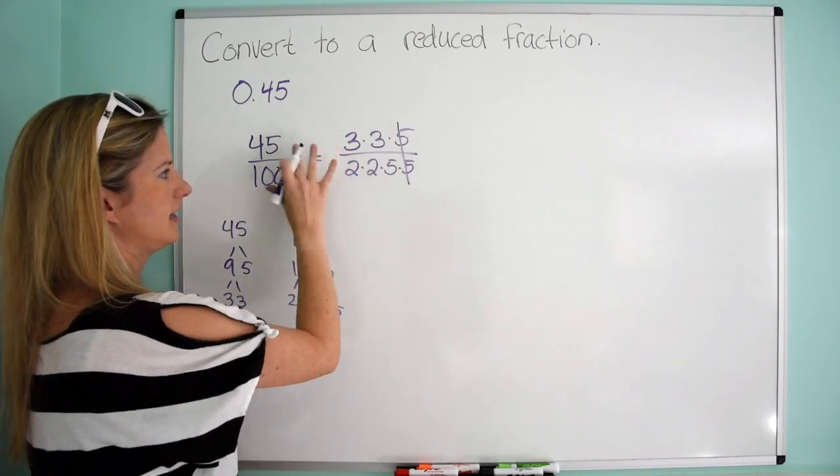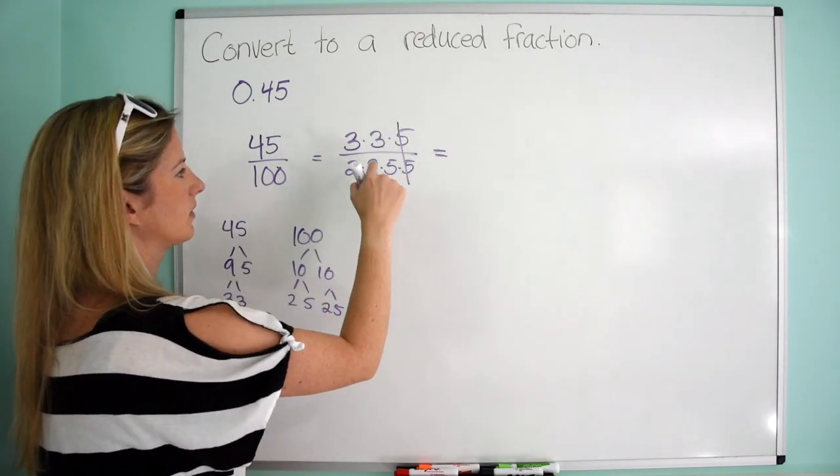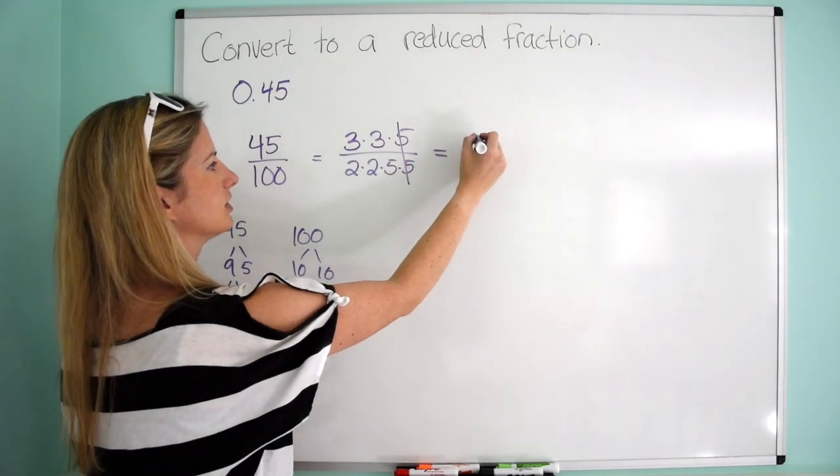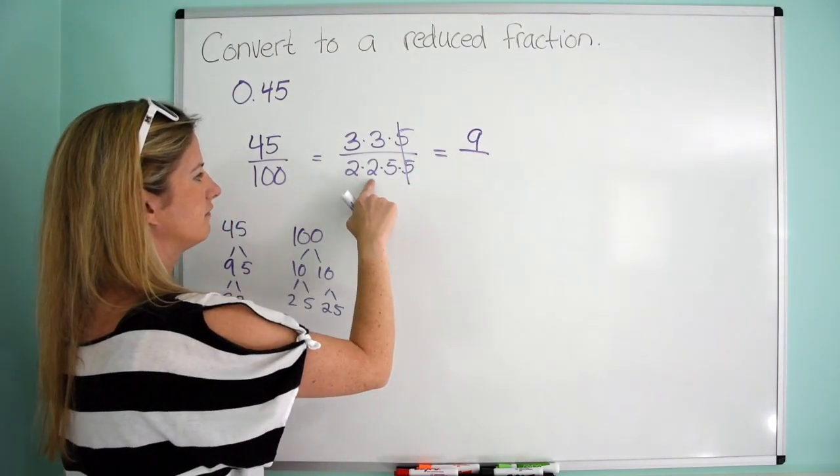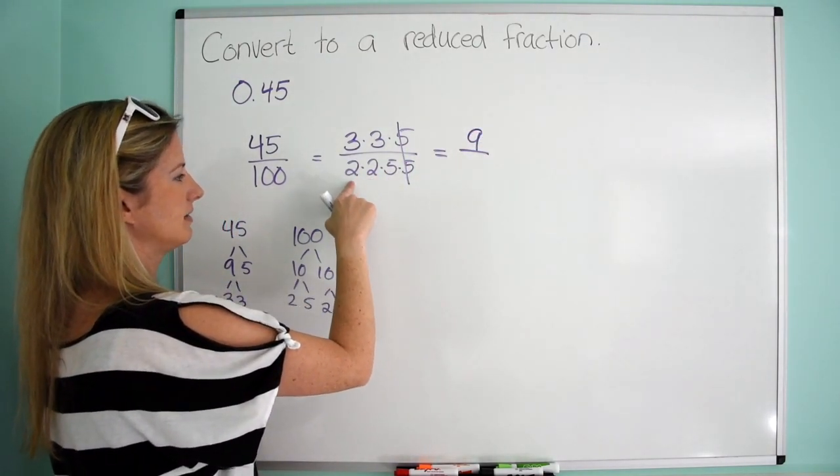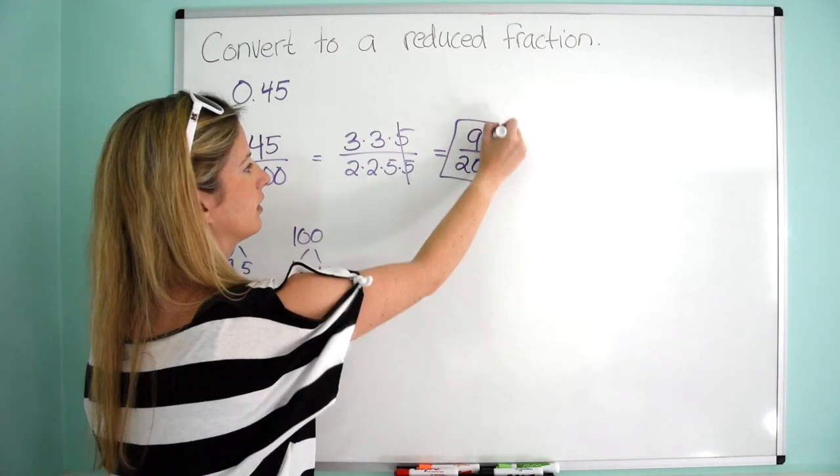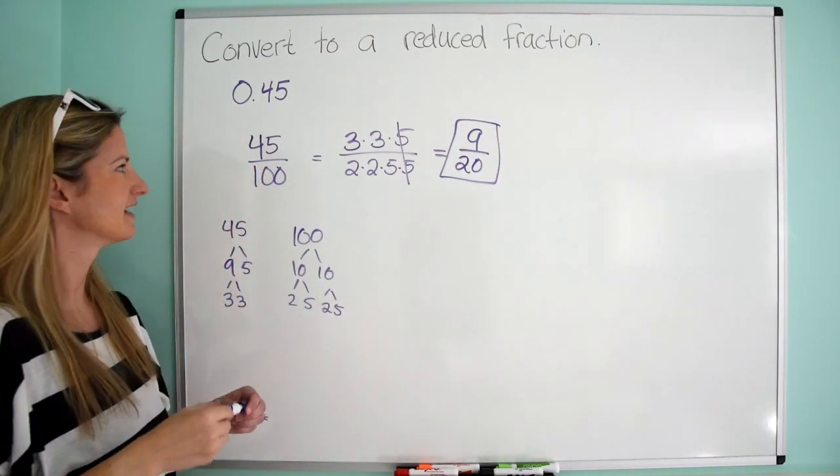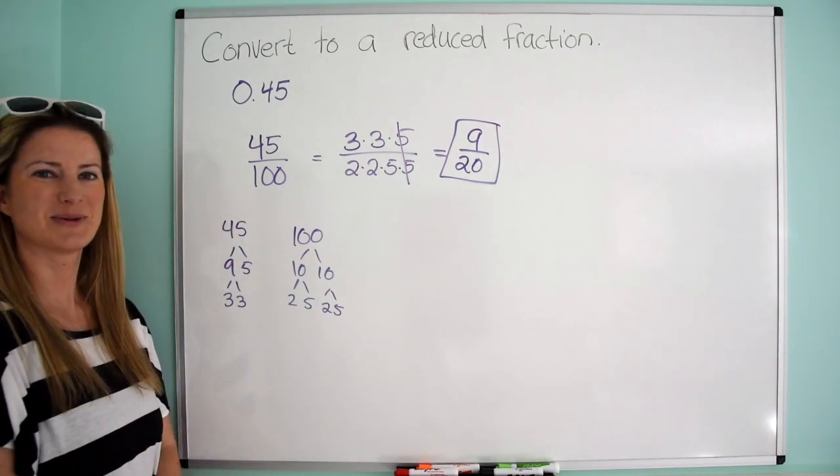So then check your later fives and nothing else can go away. So I'm looking at 3 times 3, which is 9 over. 5 times 2, this is easy, 10 times 2 is 20. So 9 over 20. Perfect.